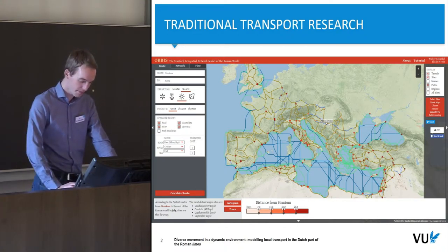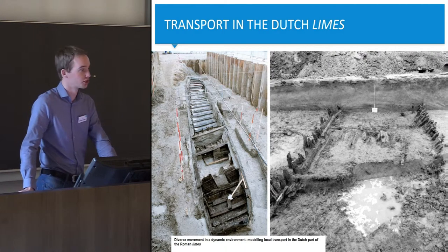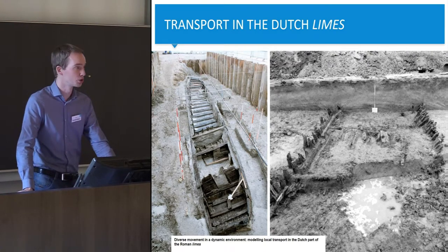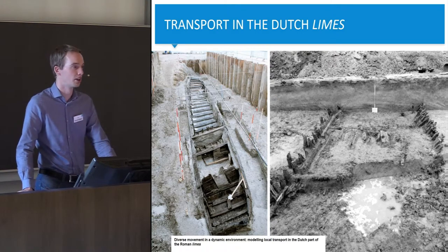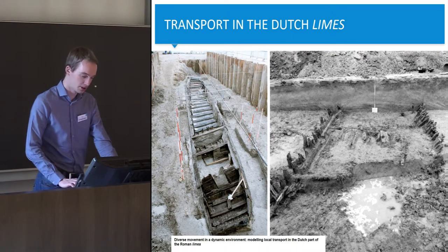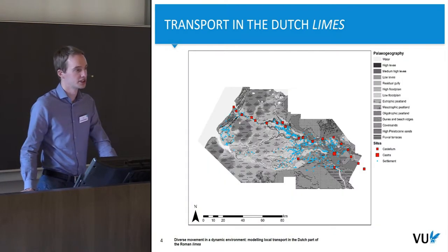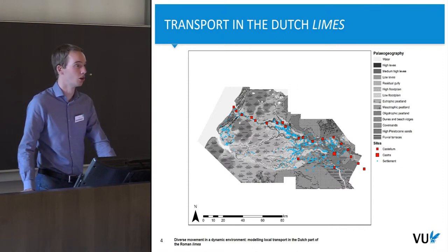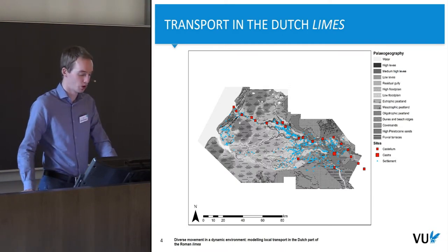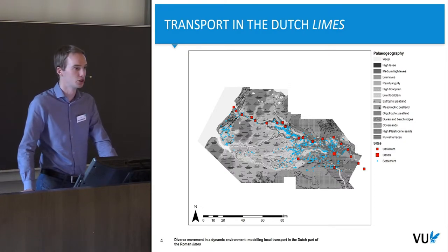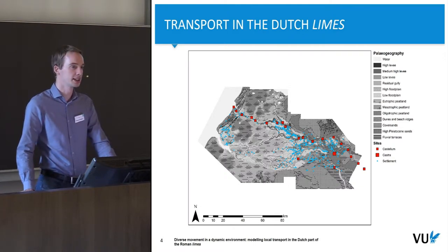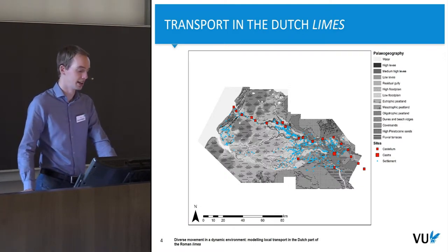This is also reflected in the archaeological record. In the Netherlands, we have evidence for shipping on the Rhine and Meuse rivers and for the military road that ran along the Rhine connecting all the military fortresses. But in our project, our interest is in the relationships between the local population and the military population — we're talking about local small-scale transport that leaves very little material traces, as people more likely traveled along routes that leave no physical evidence.